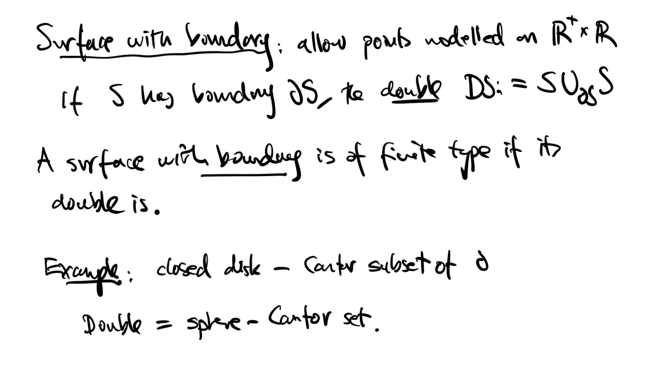We sometimes consider surfaces with boundary. This means we allow some points to have neighborhoods modeled on a half plane, a product of R with a half line. If a surface S has boundary, then we define the double to be the surface obtained by taking two copies and identifying them together along their common boundary. We say that a surface with boundary is of finite type if its double is. Notice that this is not the same as saying it's homotopic to a finite complex.